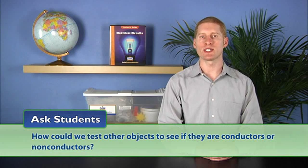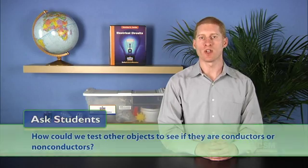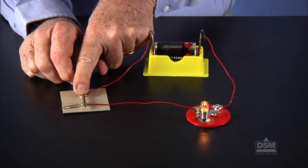Then ask, how could we test other objects to see if they are conductors or non-conductors? Students may suggest opening the paperclip switch and then placing the objects, one at a time, across the paper fasteners.